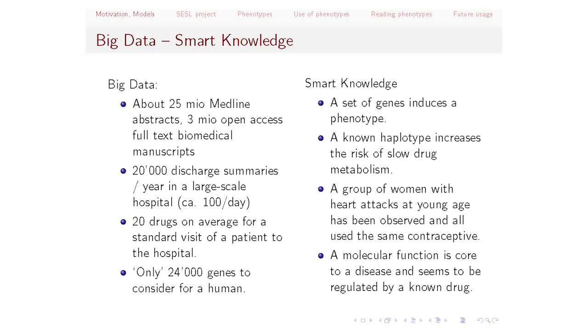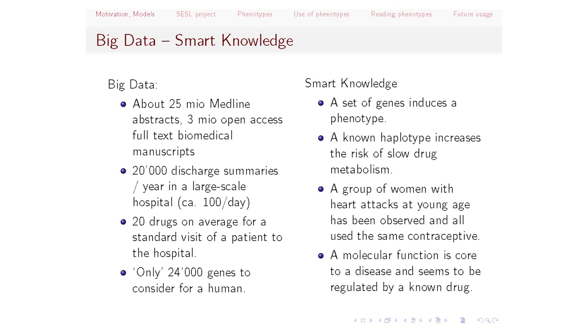Big data versus smart knowledge: I've shown annotation solutions on a large scale. Where is the difference? Big data is the easy part — 25 million MEDLINE abstracts, about three million open access full-text documents. The number of journals and publications is still increasing. From a different domain, there are 20,000 discharge summaries per year in a large hospital — 100 per day. These documents are precious information, reporting on a patient: which treatments he received, which disease, and what problems to expect next time.